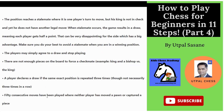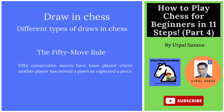Draw by the 50-move rule: if 50 consecutive moves have been played where neither player has moved a pawn or captured a piece, it can be declared a draw. Many beginners think it's 15 or 30 moves, but it is actually 50 full moves. A full move counts when White plays and then Black plays — that is one move. So White plays, Black plays — one; White plays, Black plays — two; and so on up to 50.